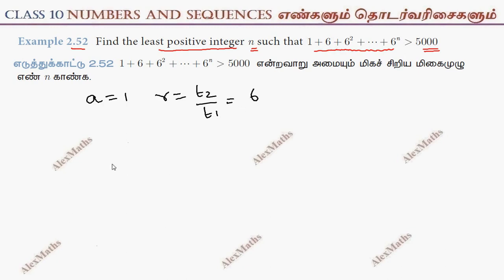So 6 by 1 is 6. If you look at the Sn formula, a into r power n minus 1 divided by r minus 1. This formula is when r not equal to 1 and r is greater than 1, so that's why I use it.